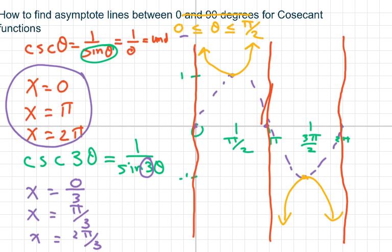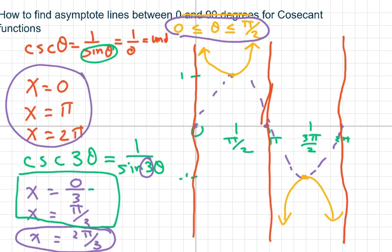Now if we're trying to find between 0 and pi over 2, this one's too large. So I only have two answers here. So my answers are going to be x equals 0 and x equals pi over 3.